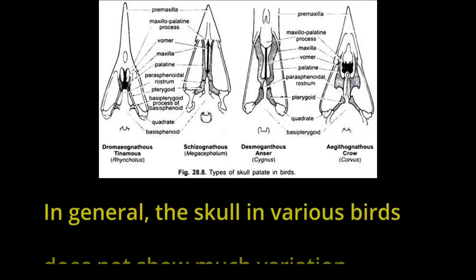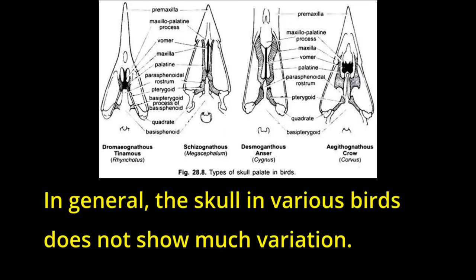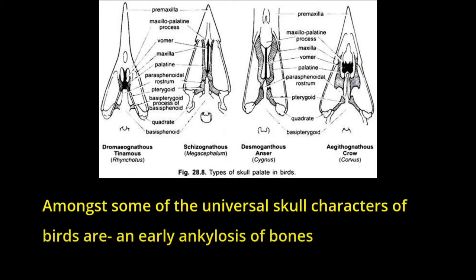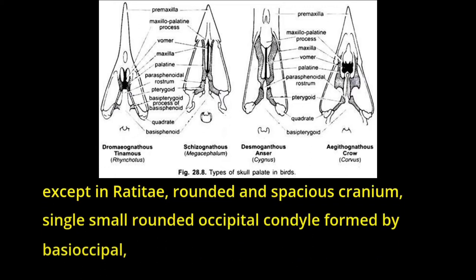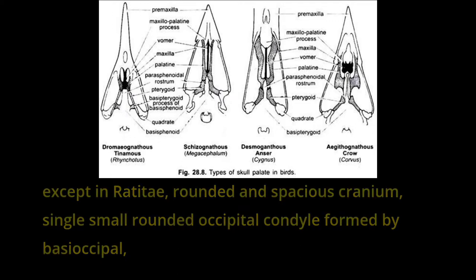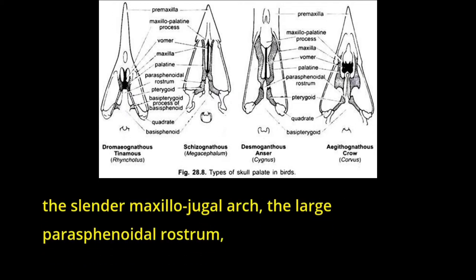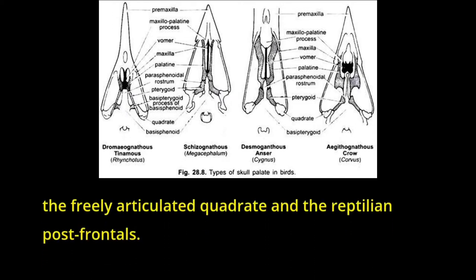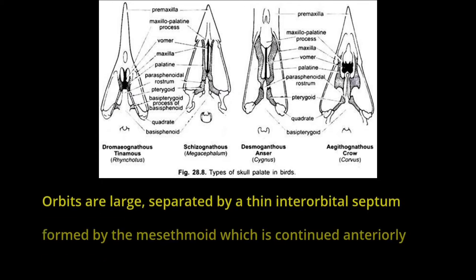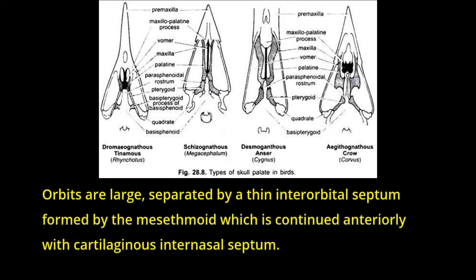Palate in birds. In general, the skull in various birds does not show much variation. Amongst some of the universal skull characters of birds are an early ankylosis of bones except in Ratitae, rounded and spacious cranium, single small rounded occipital condyle formed by basioccipital, the upper beak composed mainly by the two premaxillae united into a large triradiiate bone, the slender maxillo-jugal arch, the large parisphenoidal rostrum, the freely articulated quadrate and the reptilian postfrontals. Orbits are large, separated by a thin interorbital septum formed by the mesethmoid, which is continued anteriorly with the cartilaginous internasal septum.